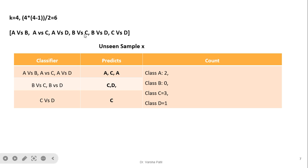For example, with k equals 4, six classifiers are trained: A vs B, A vs C, A vs D, B vs C, B vs D, and C vs D. For an unseen sample, running all classifiers gives votes: A appears 2 times, B appears 0 times, C appears 3 times, and D appears 1 time. Since C has the highest count, the unseen sample likely belongs to class C.